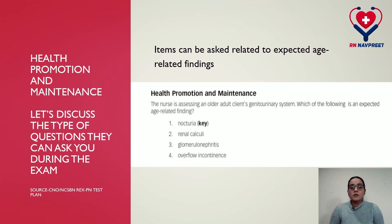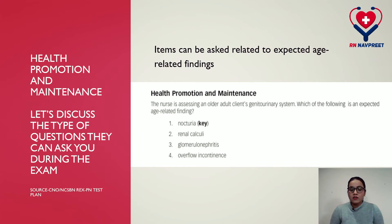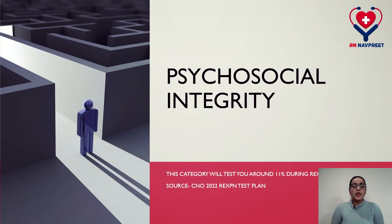Under this category, you can be asked about expected age-related findings. For example: The nurse is assessing an older adult client with the genitourinary system. Which of the following is an expected age-related finding? The correct answer is option one: nocturia. This is how you will be asked questions related to health promotion and maintenance. Make sure to go over the statements mentioned in the previous slides in order to crack your exam on the first try.